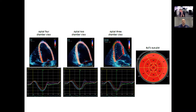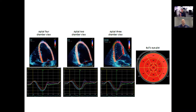With ejection fraction, you form an idea first and then do the measurement. With strain it's similar — you've got to use your eyeball and have an idea of what you're after. Maybe you can pick up mild abnormalities, but if you're getting severe abnormalities when you thought it was normal, there's probably something wrong with your speckle tracking. That's why it's really important to know the technique and its limitations.